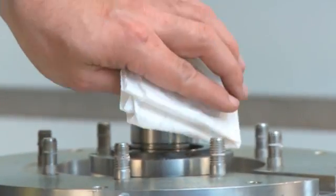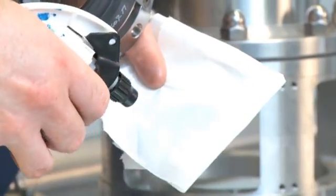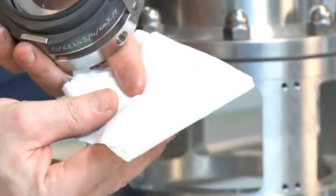Clean the surface of the stationary part of the seal with alcohol. Clean the surface of the rotating part of the seal with alcohol.